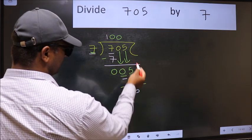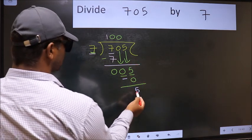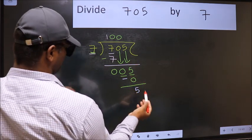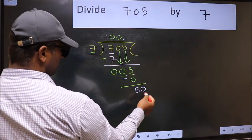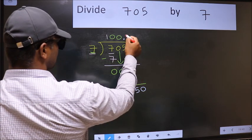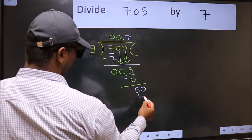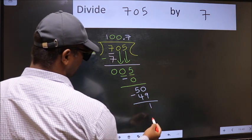Over here, we did not bring any number down. And 5 is smaller than 7. So now we can put dot and take 0. So 50. A number close to 50 in 7 table is 7 sevens, 49.